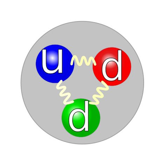Protons and neutrons constitute the nuclei of atoms. Since protons and neutrons behave similarly within the nucleus, and each has a mass of approximately one atomic mass unit, they are both referred to as nucleons. Their properties and interactions are described by nuclear physics.